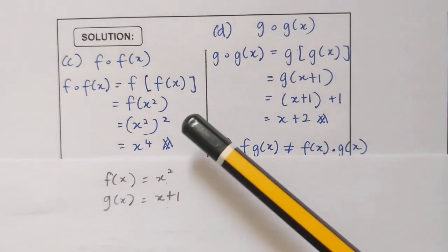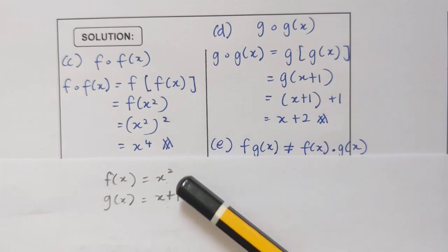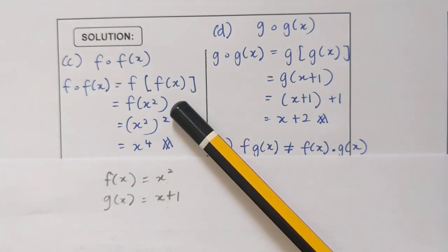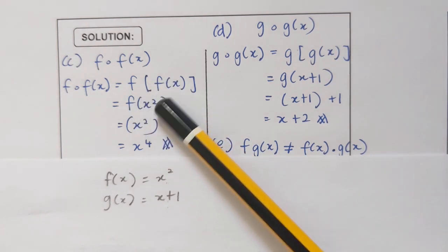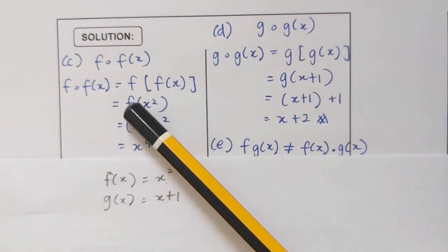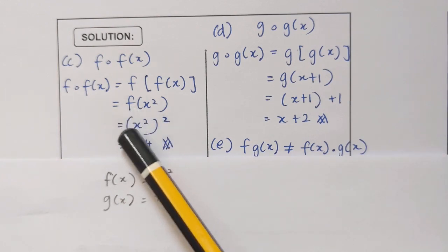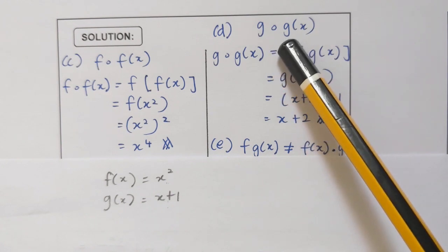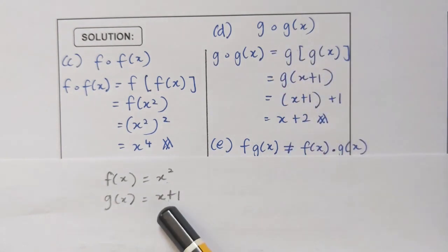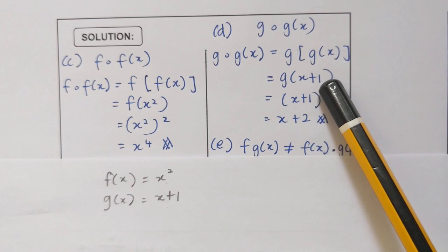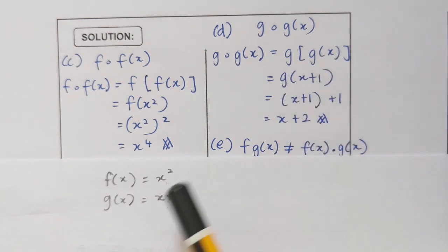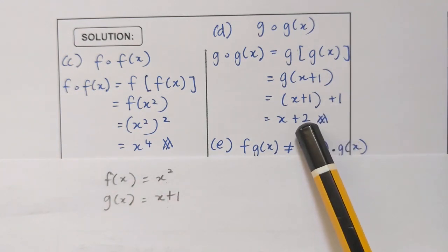Now f of f(x). We substitute x squared into our function, so we will get f(x²), and then you substitute again your new x into your function f. So I have x squared squared, which is x⁴. Now for d, I have g of g(x). g(x) here is x plus 1, so I substitute my g(x). Now I need to substitute my new x into my function g, which gives x plus 1 plus 1. So I will get x plus 2.